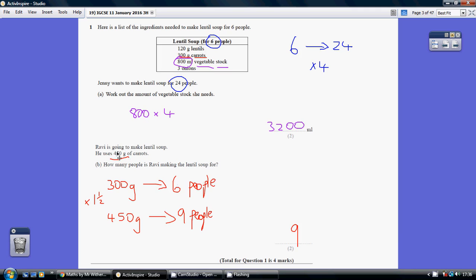We're using 450 grams of carrots. So 450 will give us enough carrot for how many people having the soup. So how do we get from 300 to 450?